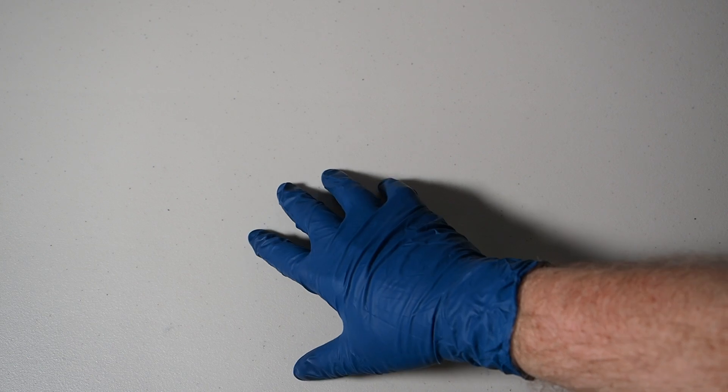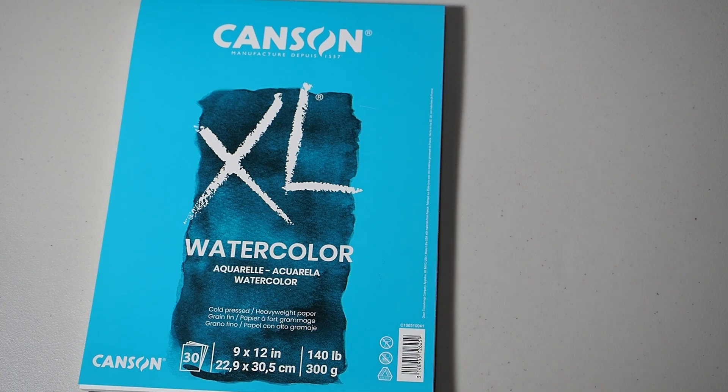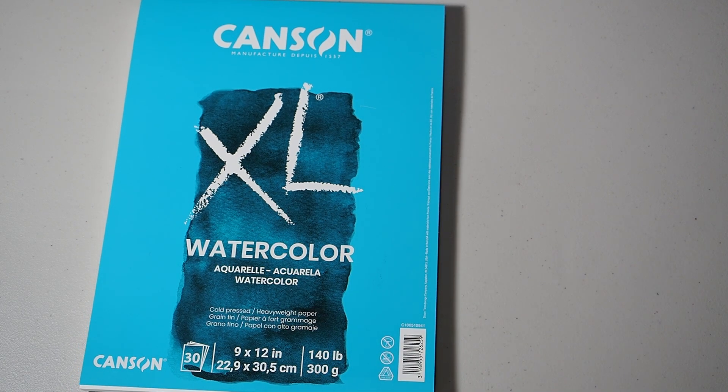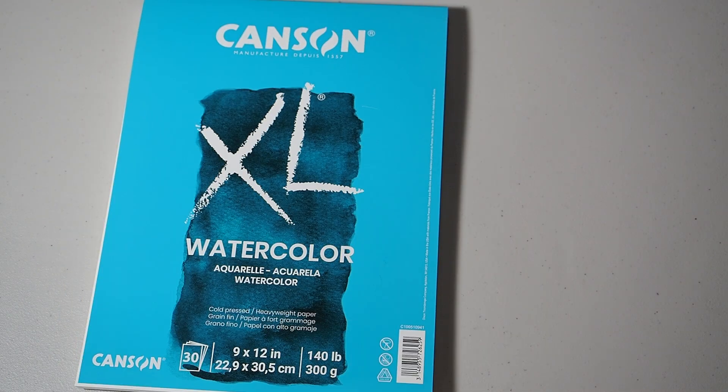Second, I recommend wearing nitrile gloves. These chemicals will stain your hands, clothes, work surfaces, and anything else it comes in contact with. It's a good idea to protect anything that you don't want turning blue. Next you'll need some paper to make the prints. I've used printmaking paper, watercolor paper, and cotton fabric successfully. This is cheap watercolor paper that I got at a local art store and it works great for getting started. Once you get some prints done you may want to experiment with different papers as they do impact the final image a little bit.